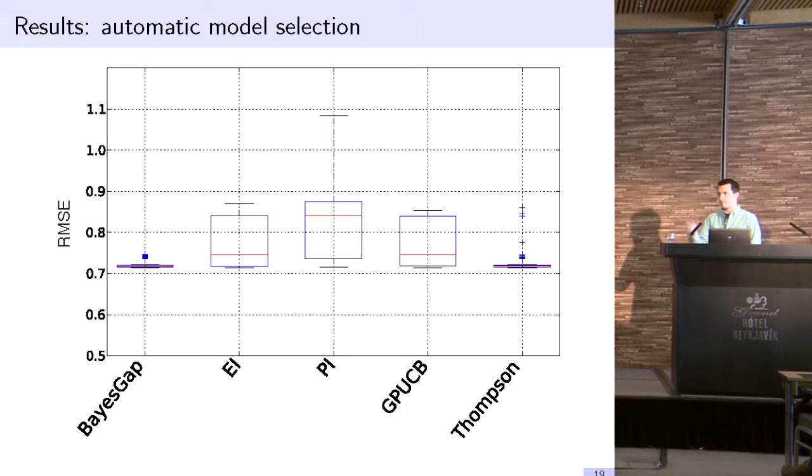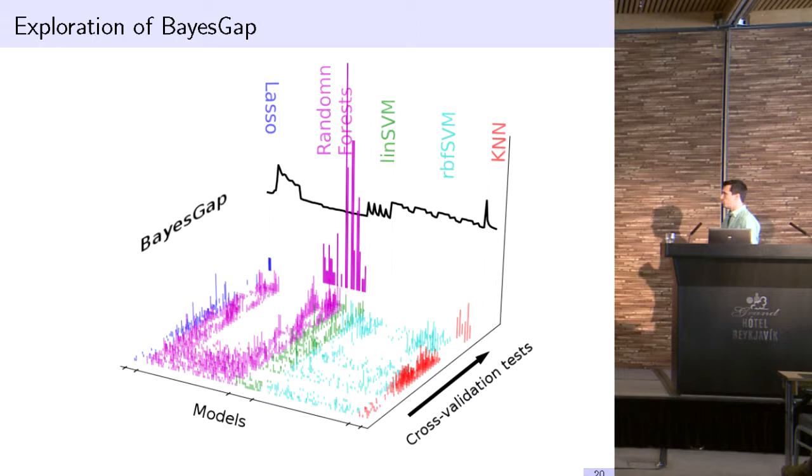I wanted to give a brief illustration of the actual process going on. Across this axis we have the different models we're looking at. Time is going into the screen, as we run more and more tests. Each bar represents a single fold of the model. Along the back wall we show the actual recommendation and how often we recommended it over a number of different runs.